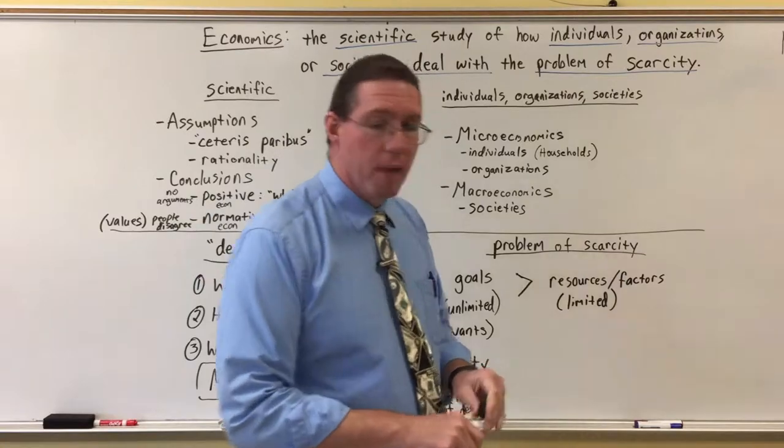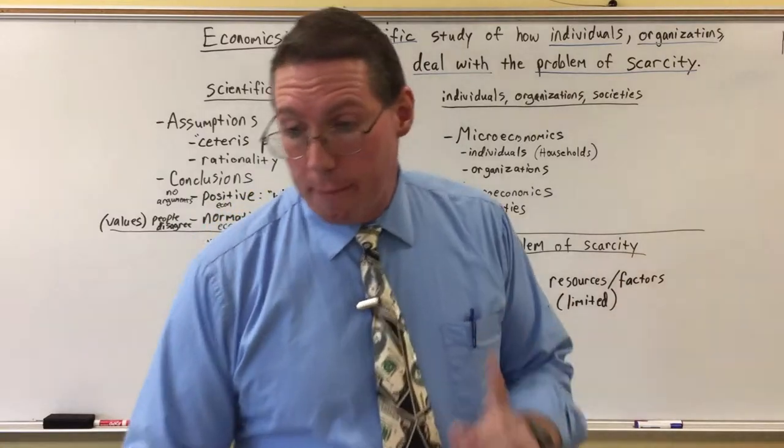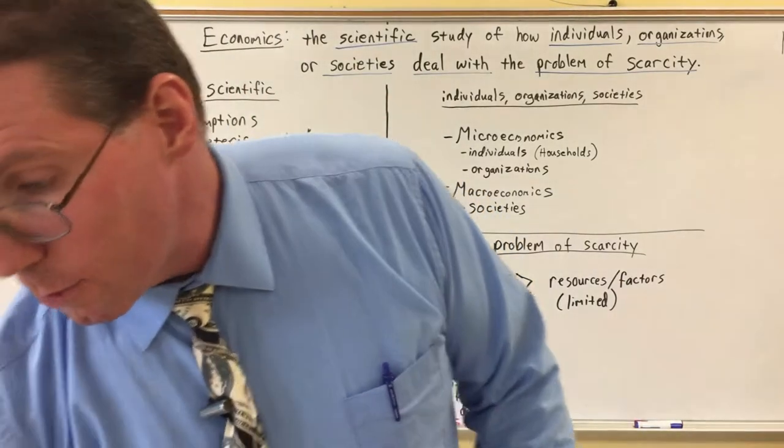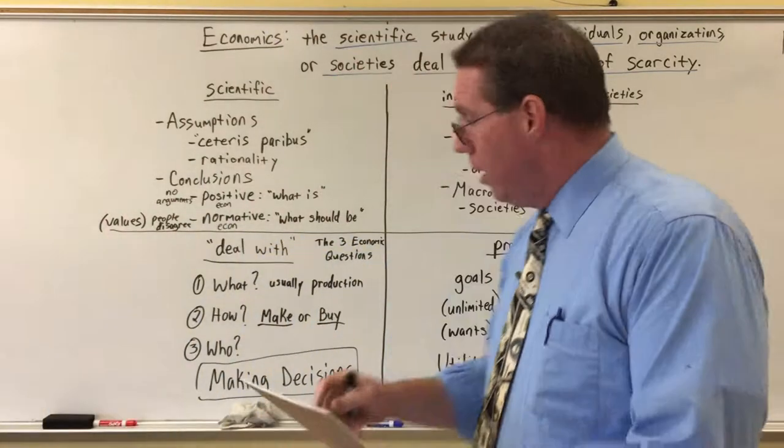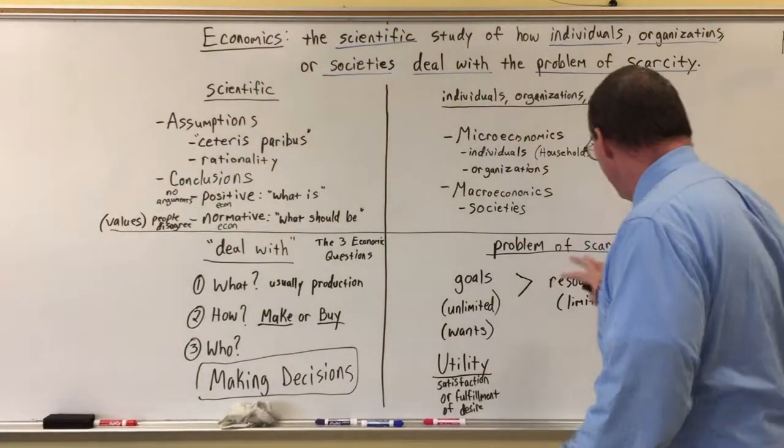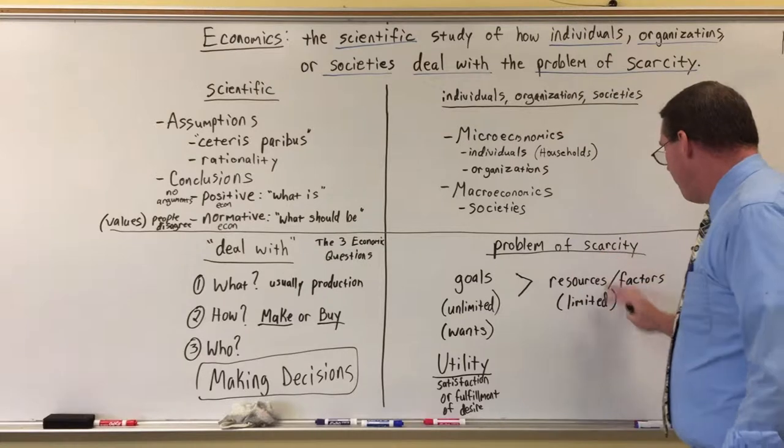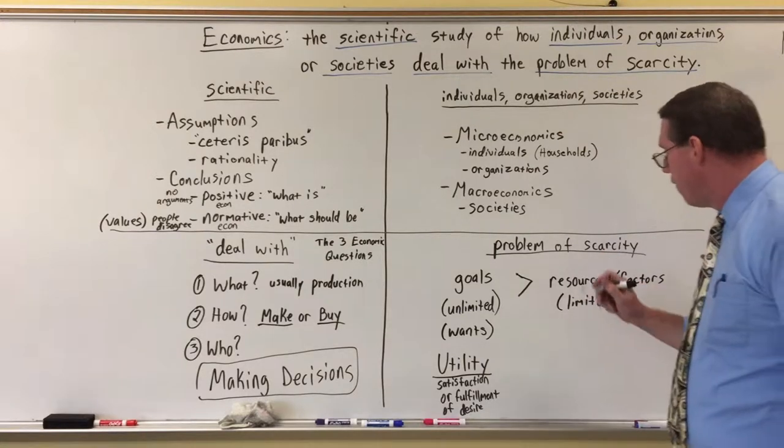In economics, we discuss four factors of production, but we're going to focus on three of them. We call them the factors of production.